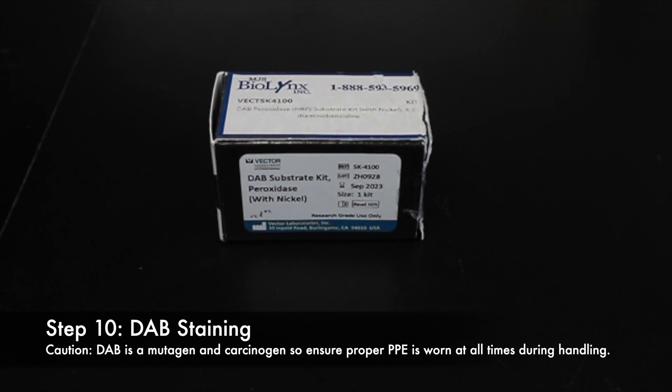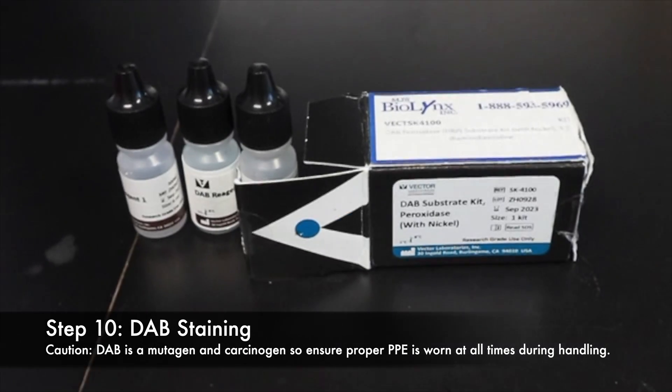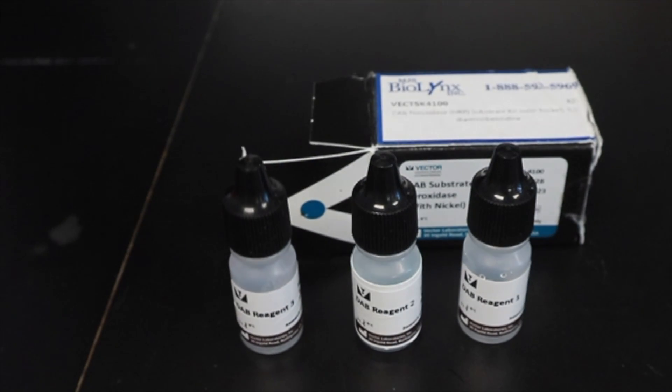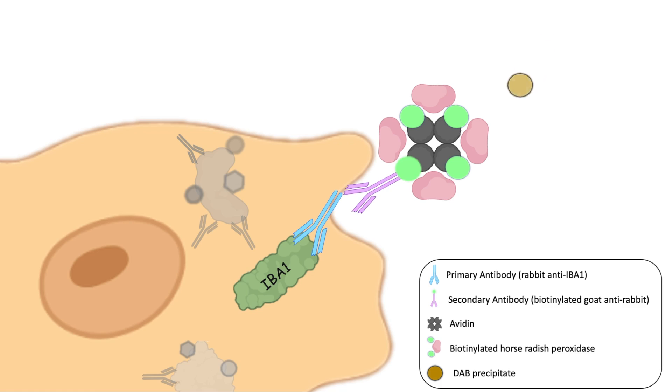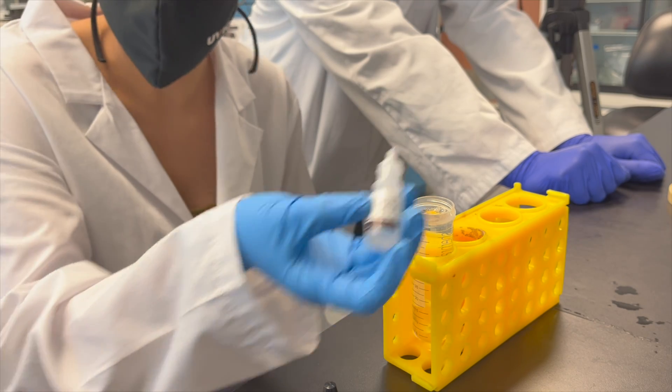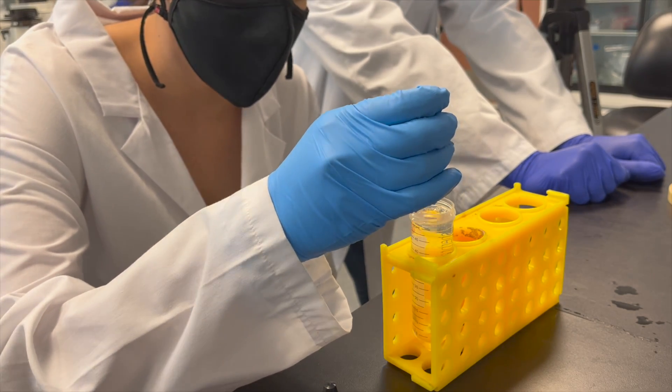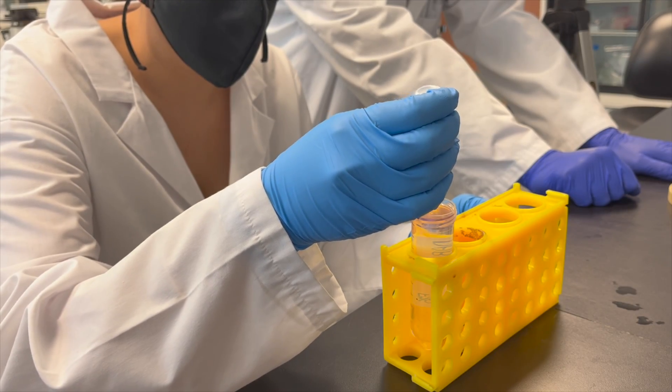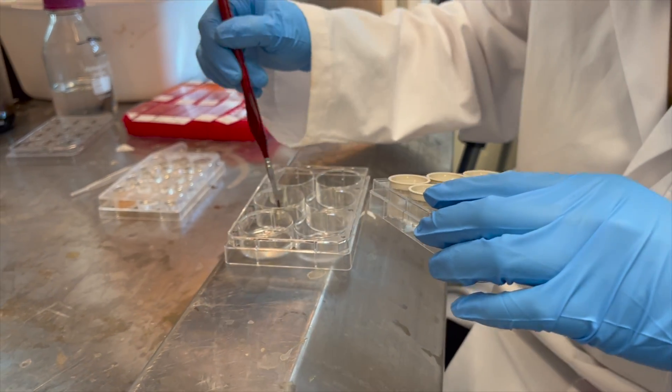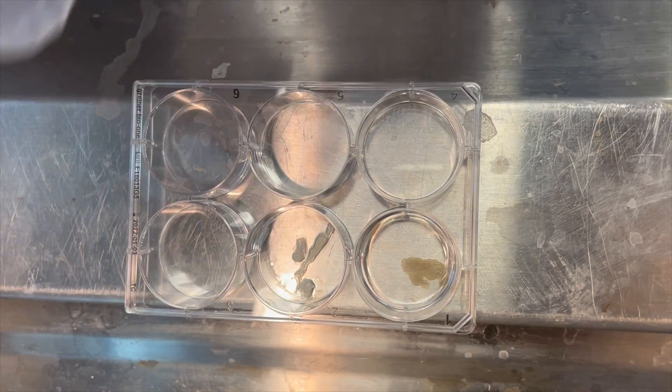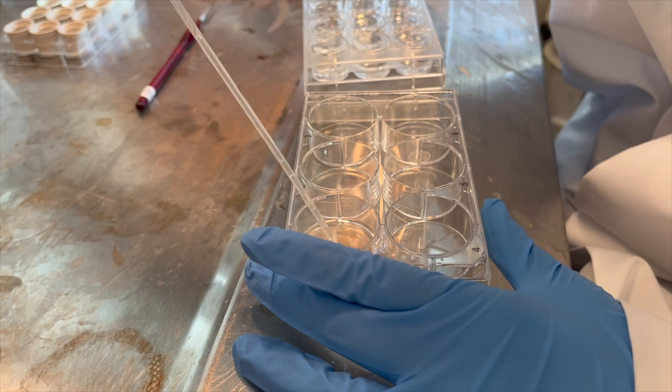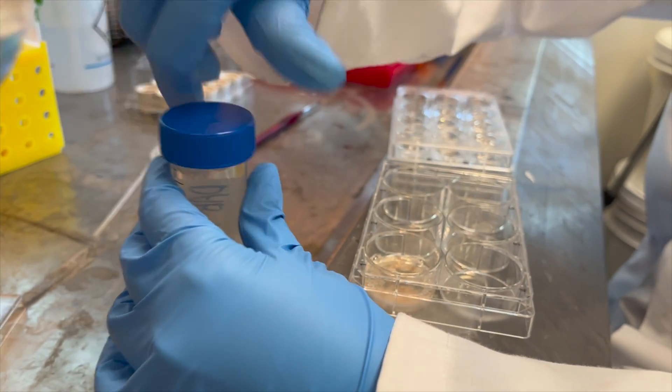We will now be using reagents 1, 2, and 3 from this DAB substrate kit from VectaStain Laboratories. DAB, or 3,3-diaminobenzidine, is a chromogen that is oxidized by horseradish peroxidase to form a brown precipitate in IBA1-positive cells. To make the DAB solution, add 2 drops of reagent A, 4 drops reagent B, and 2 drops of reagent C for every 5 milliliters of distilled water. Then, working under a fume hood, transfer the tissue to a new plate and add 1 milliliter of DAB solution to each well using a transfer pipette.